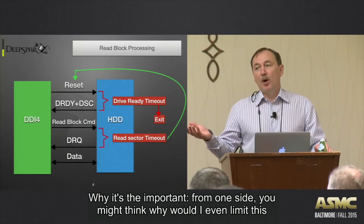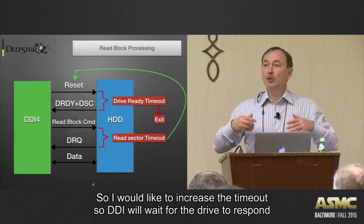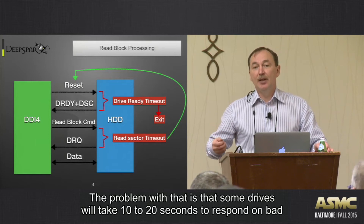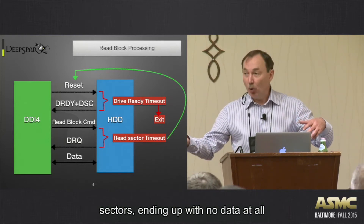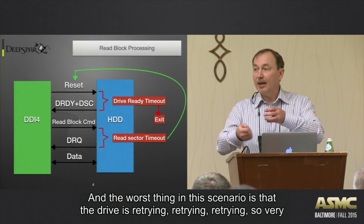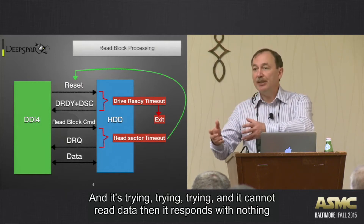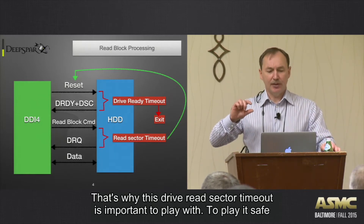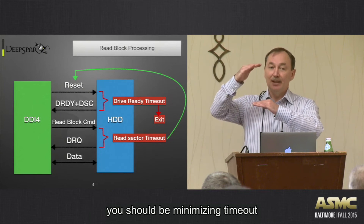You might wonder: why limit this timeout at all? You want the data, so you'd want to increase it so DDI waits longer. But the problem is that some drives may take 10 to 20 seconds to respond on bad sectors, ending up with no data at all. The worst scenario is the drive keeps retrying and cannot read the data, causing very high stress on the drive, and then responds with nothing.